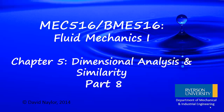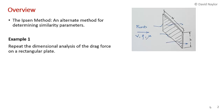This is Chapter 5, Dimensional Analysis and Similarity, Part 8. In this video I'm going to describe an alternate method for determining the similarity parameters. It's called the Ipsen method, and it's an alternative to the method of repeating variables. I'm going to do two examples.